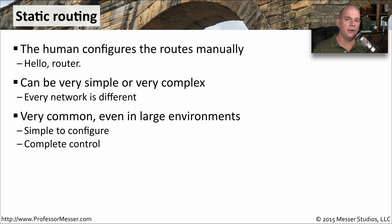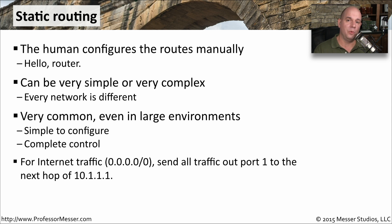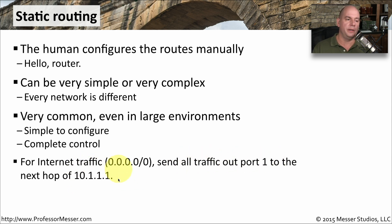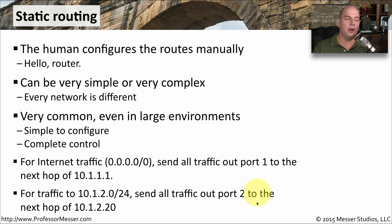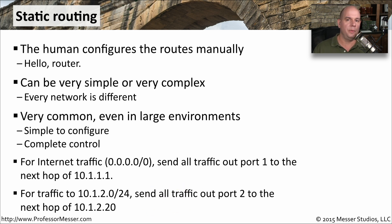In some cases it may be a simple configuration with just a few entries in a routing table. In this way, the administrator of the network has complete control over where the traffic is going, with no question that anything might change dynamically. For example, you might configure your router so that all internet traffic — matching 0.0.0.0/0, meaning all traffic by default — is sent out port 1 to the next hop of 10.1.1.1. For traffic on the inside of the network going to 10.1.2.0 with a 24-bit subnet, you send it out port 2, the inside interface, to the next hop of 10.1.2.20. By simply setting two static routes, you can determine where traffic is going to go.